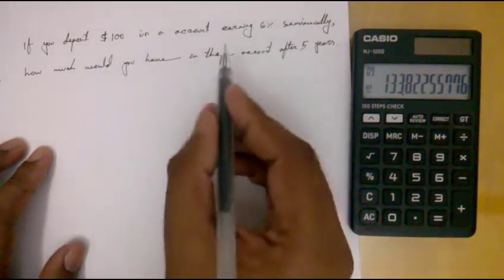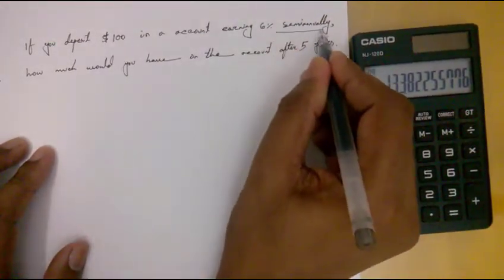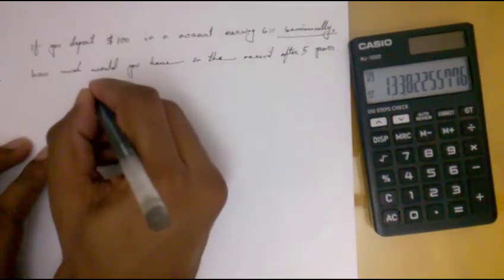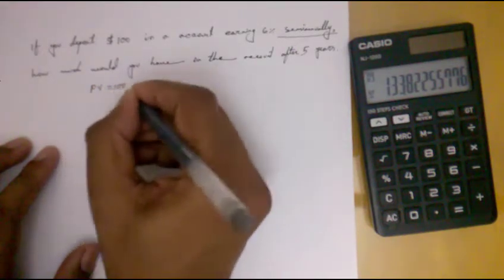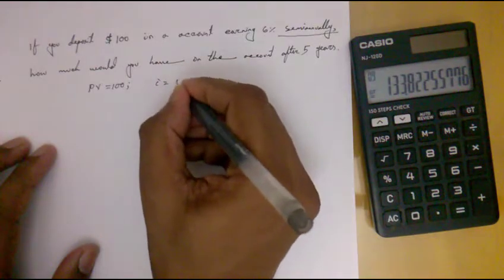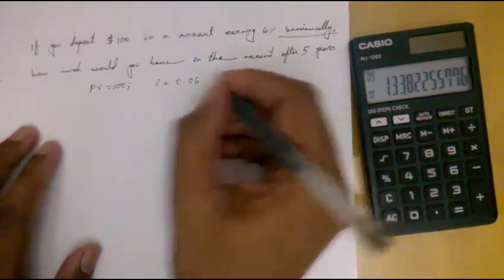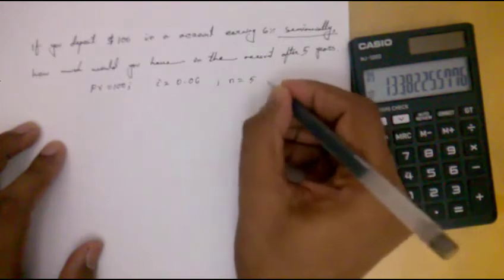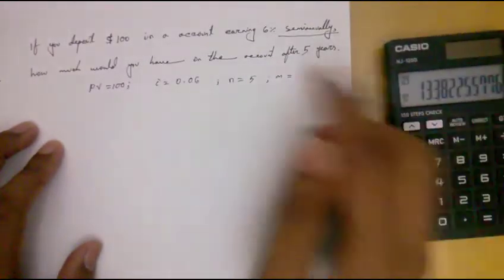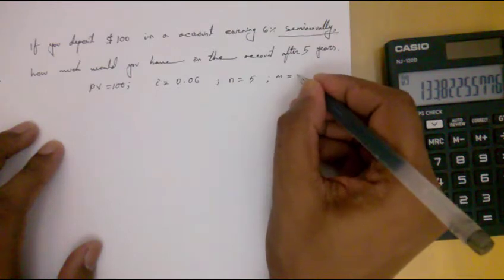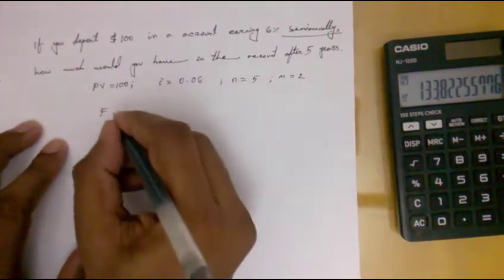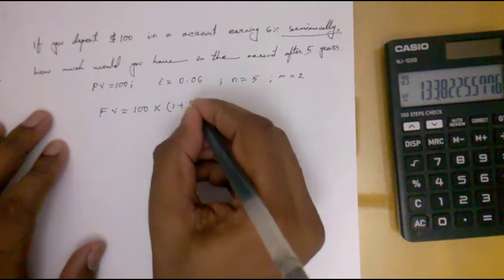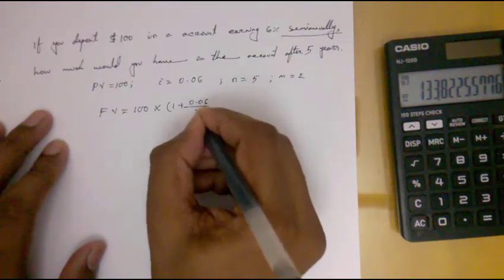Now we'll solve another problem: if you deposit $100 in an account earning six percent compounded semi-annually, how much would you have in your account after five years? Our present value equals 100, rate of interest equals 0.06, n equals five, and since it is compounded semi-annually, m equals two.